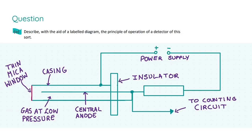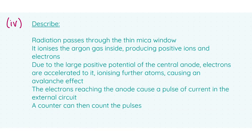In part 4, we're asked to describe with the aid of a labeled diagram the principle of operation of a detector of this sort. Here is my labeled diagram, and I put in an abundance of labels just to drill home my point. If you do not include a diagram with labels, you will lose one mark. The main points in the diagram are the gas at low pressure with the central anode, the thin mica window, the power supply which supplies the voltage, and the counting circuit.